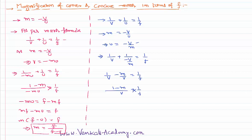Cross multiplying: v times (1 minus m) equals f, which gives v equal to f minus mf. Therefore mf equals f minus v, so m equals (f minus v) by f.